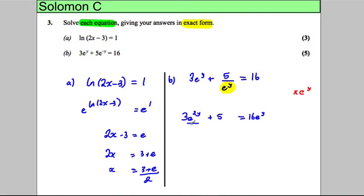Hopefully you can see where this term came from: e^y multiplied by e^y is e^(y+y) which is e^(2y). Now I'm going to subtract 16e^y from both sides, so 3e^(2y) take away 16e^y add 5 is equal to 0.